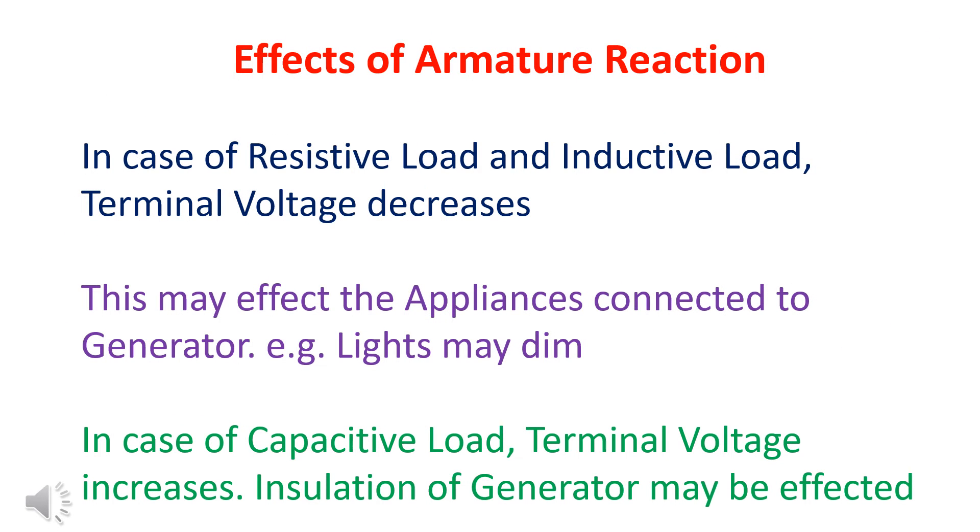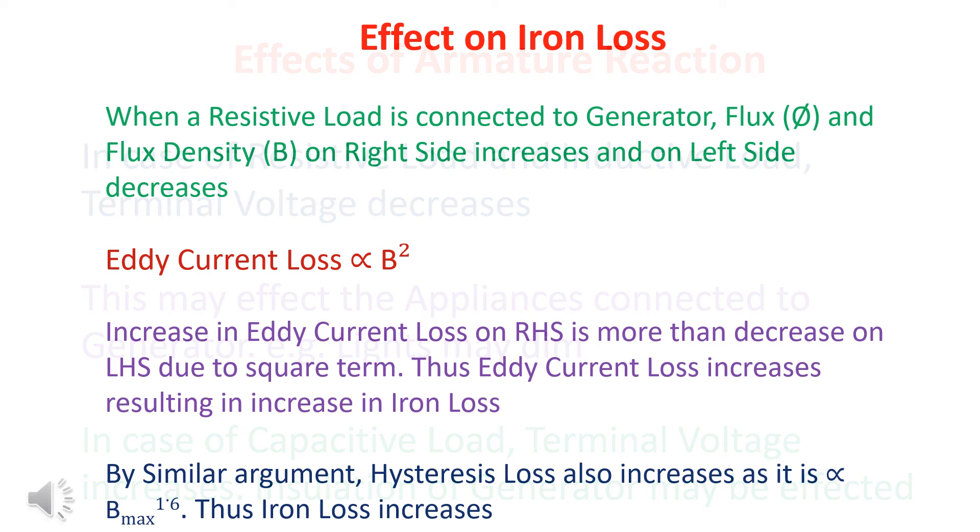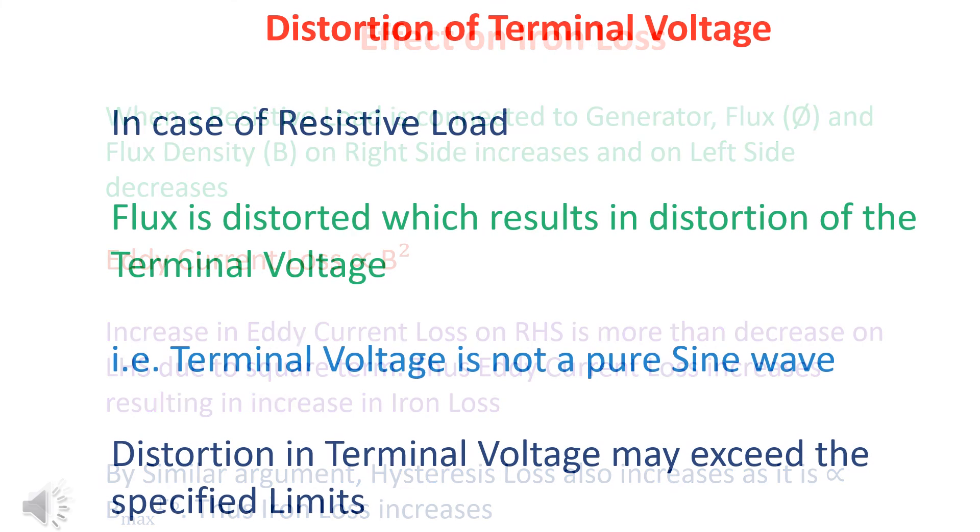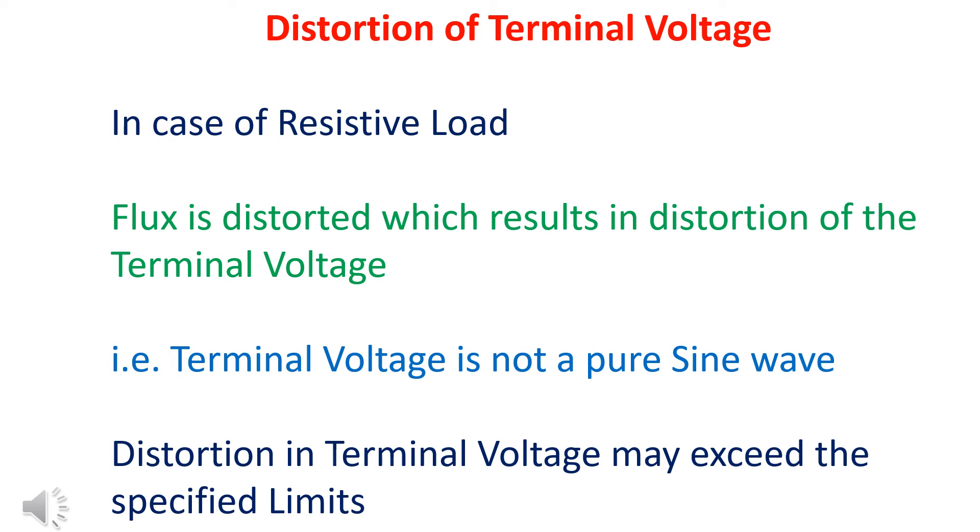There are various effects of armature reaction. In case of resistive and inductive load, terminal voltage decreases. This may affect appliances. In case of capacitive load, voltage increases. This may affect insulation. Iron loss increases in case of resistive load. In case of resistive load, flux is distorted, resulting in distortion of terminal voltage.